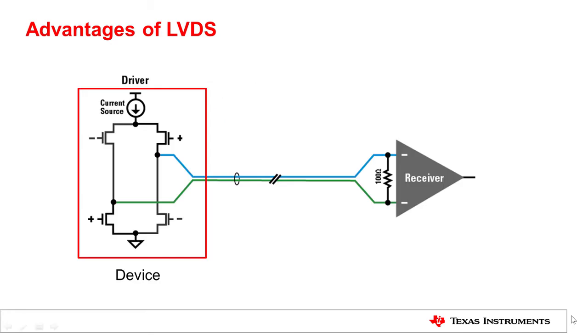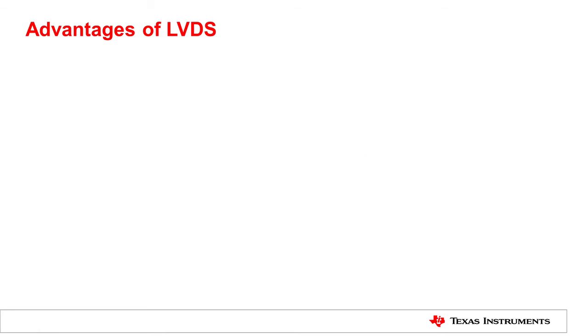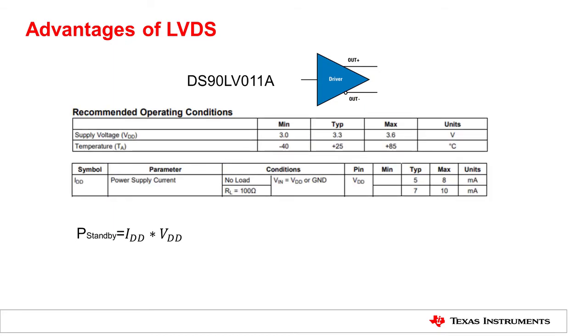When talking about power consumption by the device, we need to bring a few more components into the equation. Let's use our LVDS driver, DS90LV011A, as an example. To get typical power consumption in standby mode, we need the typical voltage and the typical current draw. These two tables are taken straight from DS90LV011A datasheet. The typical supply voltage VDD is 3.3 volts, and the typical supply current IDD is 7 milliamp. In standby mode, the power consumption by the device is 23.1 milliwatts.